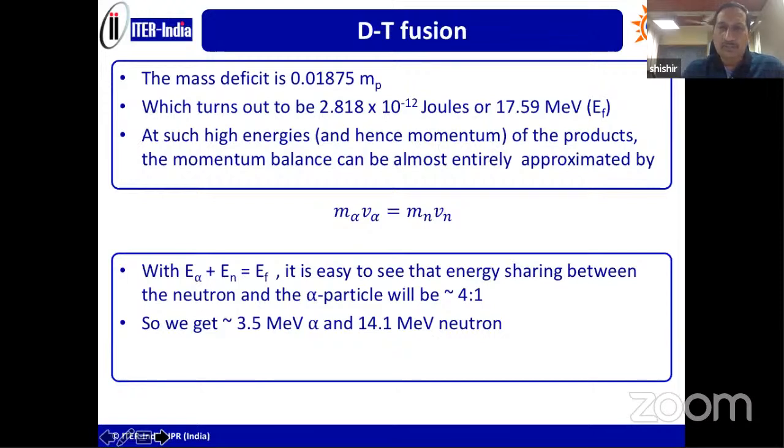We must also do the momentum balance. The original energies and momenta are too small. The 17.6 MeV energy should be distributed so that the momentum of the alpha and neutron balance. If you plug in energy of the alpha plus energy of the neutron equal to fusion energy, the sharing comes out to be 4 to 1. Therefore, alpha carries away about a fifth of the total energy and neutron takes four-fifths. So, 3.5 MeV alpha and 14.1 MeV neutrons. The final distribution of energy is done by momentum balance.